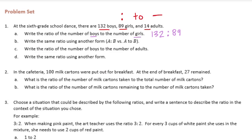This is 132 boys to 89 girls. So order matters, we must have the boys first and then the girls because that is how it is written. Now it wants us to write the same ratio in another form, so instead I'm just going to write 132 to 89. Part C: write the ratio of the number of boys to the number of adults. Now we're looking at boys and adults. The word boys are going to go first, 132, and then adults is 14. Write it in another form: 132 to 14.